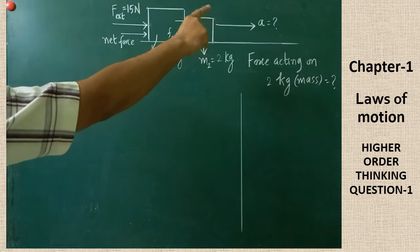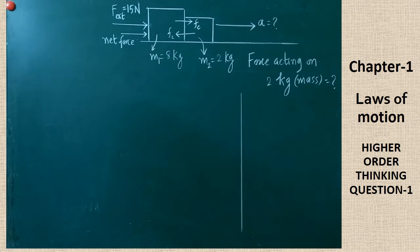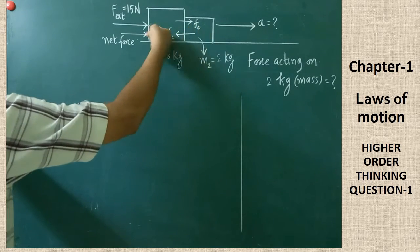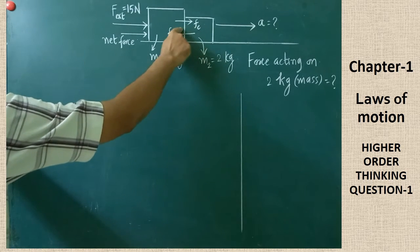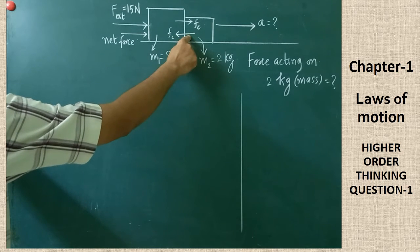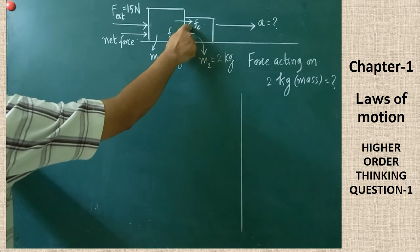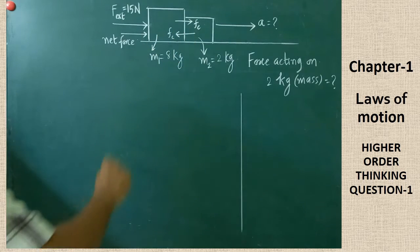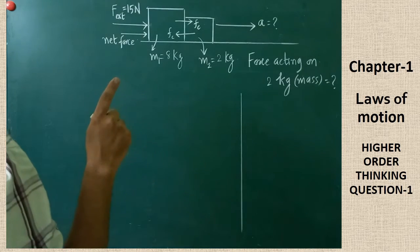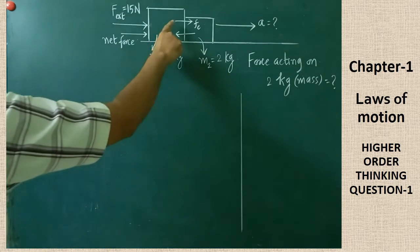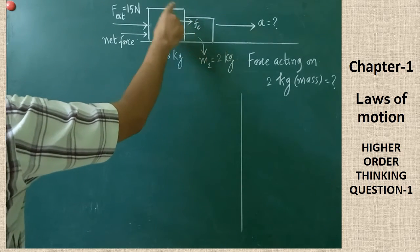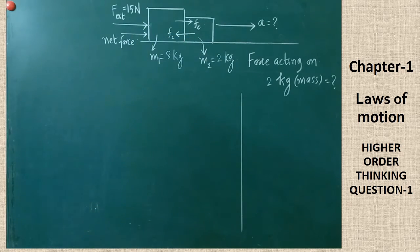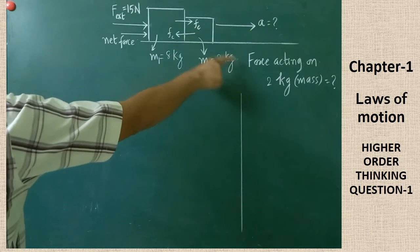Both of them will have a common acceleration, and because of that acceleration, both will be moving in this direction. When this force is applied, because of this mass, there will be an opposite force — that is, a contact force. This contact force will be acting in this direction. The first body applies a contact force on the second body, and the second body also applies a contact force on the first body. Both will be equal in magnitude and opposite in direction — that is Newton's third law. The contact force Fc acting on the second body due to the first body will equal the contact force due to the second body on the first body.